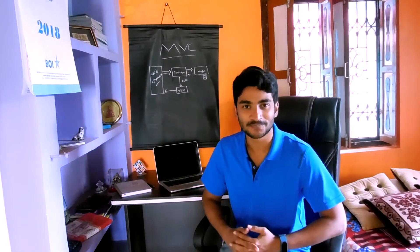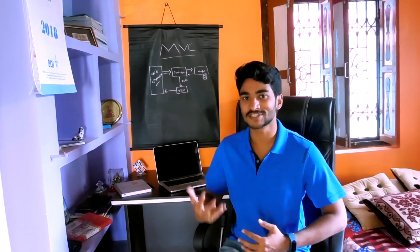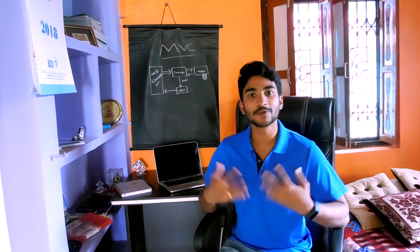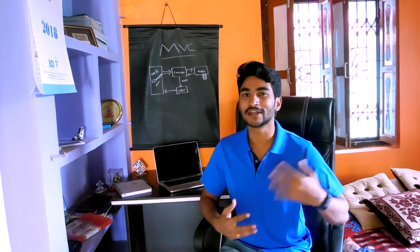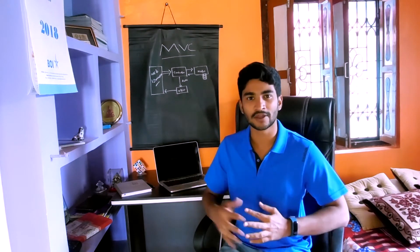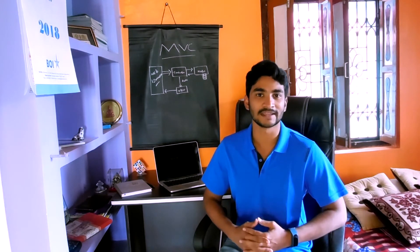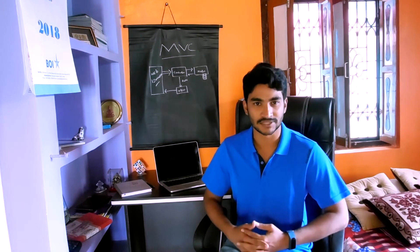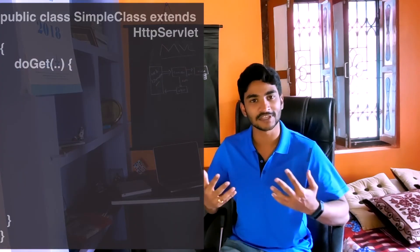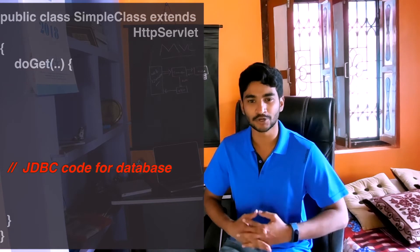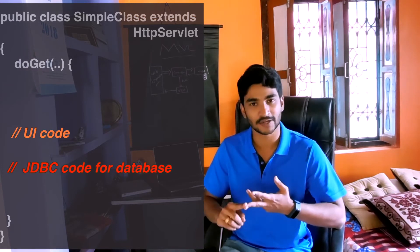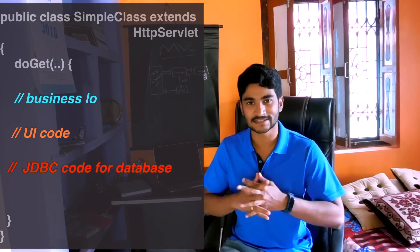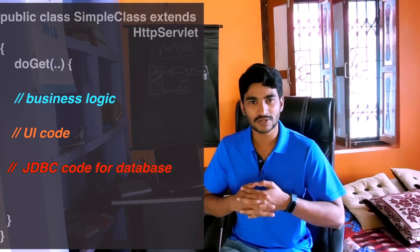Before I wrap up this video, one question you might be thinking about: why are we creating three different files? Why create a file for UI, a file for talking to a database, and a different class for writing the business logic? Why don't we write everything into a single file — our JDBC code, our servlet code, our JSP code all in one place? What's the problem with that?